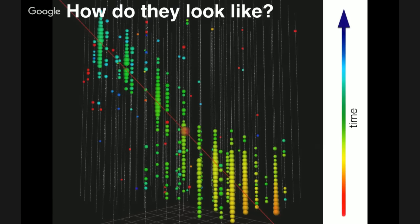This is how one of these through-going events looks: each dot is one of our DOMs, the balloon size represents the amount of charge deposited, and the color specifies the time — red is earlier, blue is later. This event started at the bottom, made its way to the top. We obtain the best-fit reconstruction direction (the red line) by minimizing over the geometry and timing of the charge deposition, and estimate the energy from the energy deposition along this line.